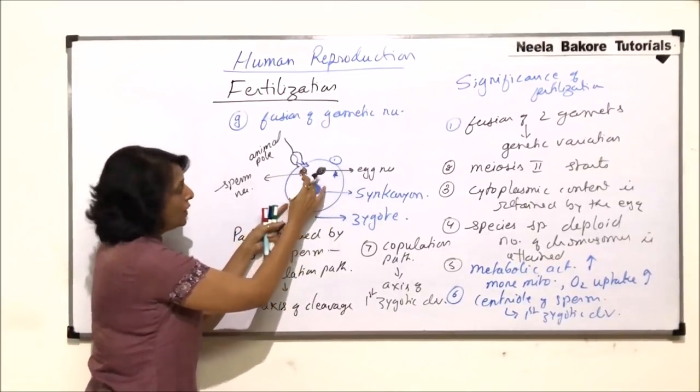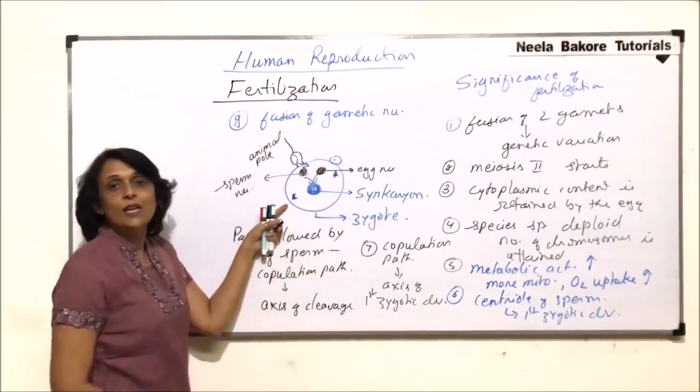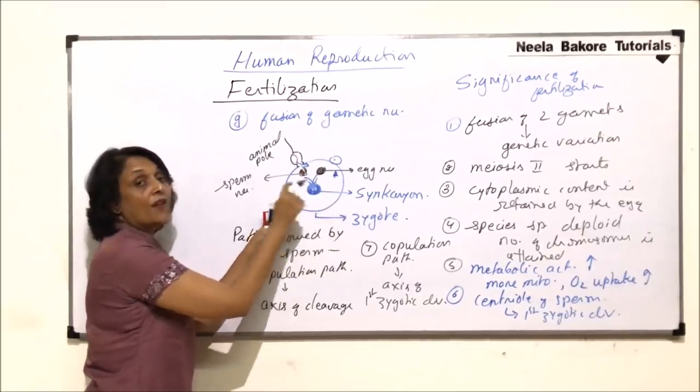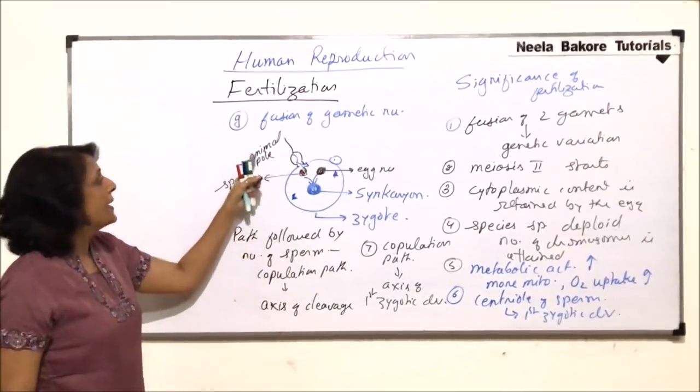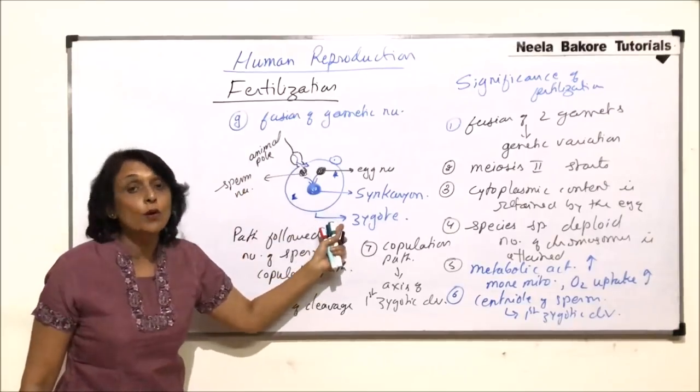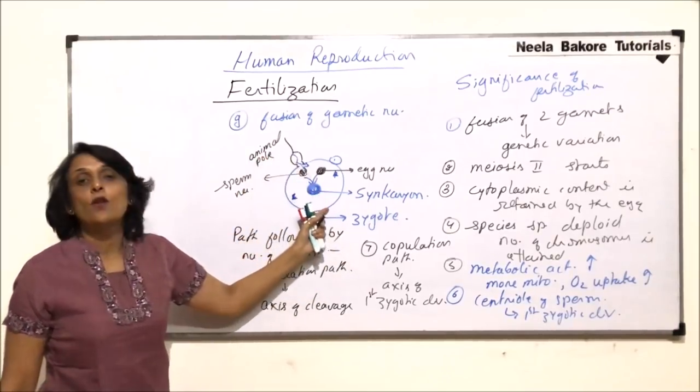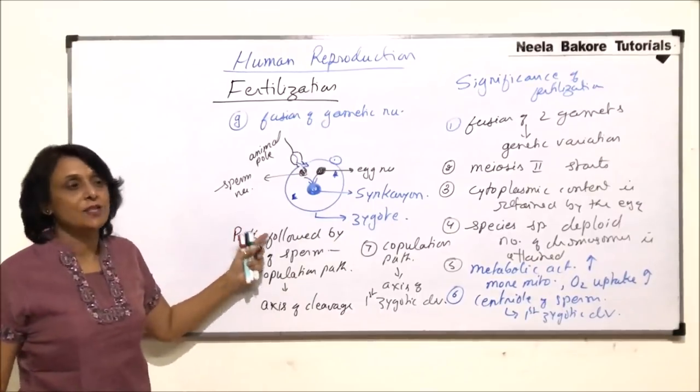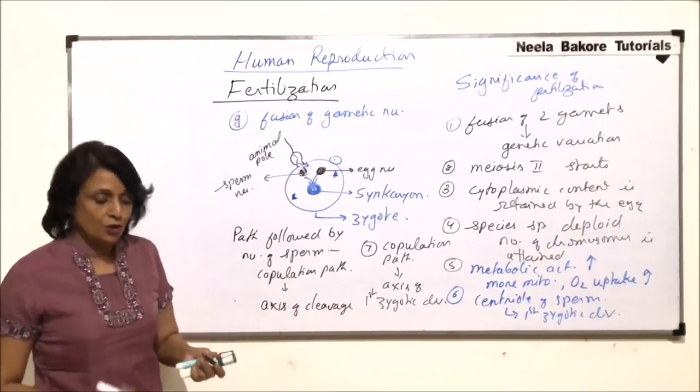So when this is how the path is, these are the two poles. All the chromosomes will get arranged on the equatorial plane and the cytokinesis would take place on this plane. So it can be said that cytokinesis takes place through animal-vegetal pole, or it follows the copulation path, or the copulation path decides the axis of the first zygotic division.